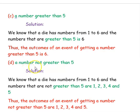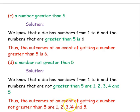The next question is a number not greater than 5. The numbers in the die which are not greater than 5 are 1, 2, 3, 4 and 5. So totally we have 5 numbers, and the possible outcome is 5. Thus the outcomes of an event of getting a number not greater than 5 are 1, 2, 3, 4 and 5.